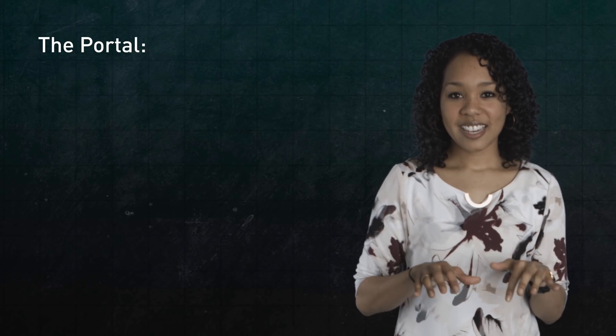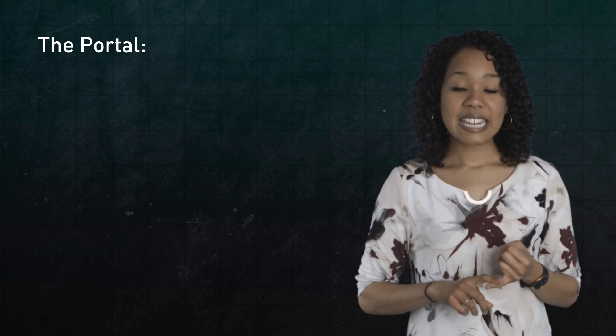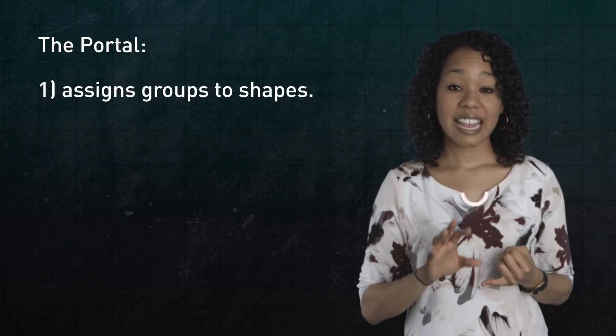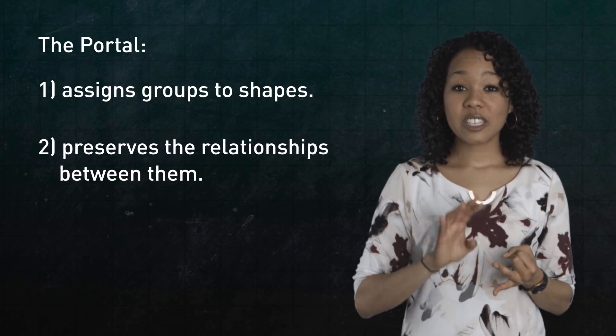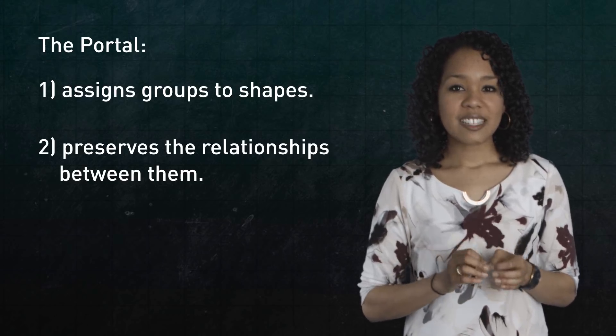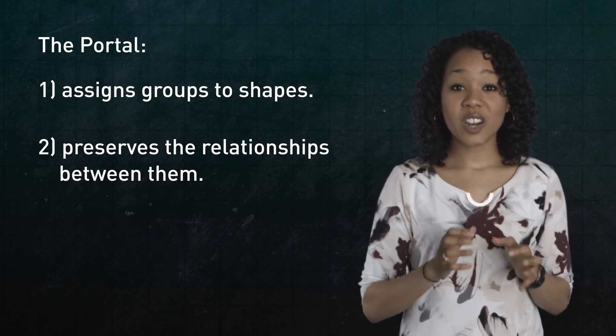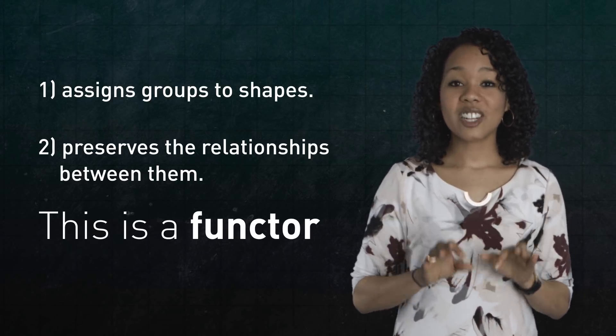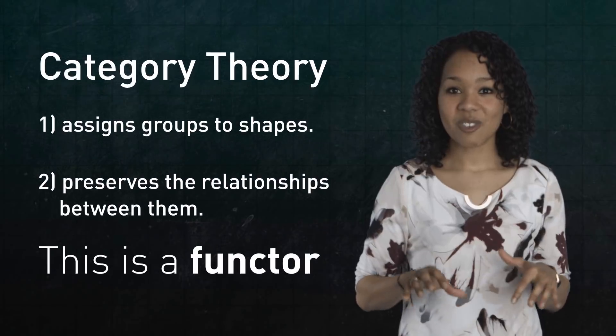What's amazing is that the portal from topology to algebra is itself mathematics. I've been calling it a portal, but it goes by a much more sophisticated name. Number one, it assigns groups like the integers to shapes like circles. And number two, it preserves the relationships or functions between them. So instead of calling this assignment or portal a function, it's called a functor. And now we have entered into a branch of math called category theory.